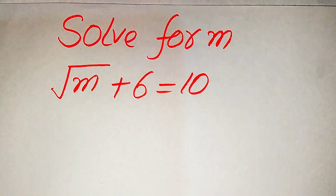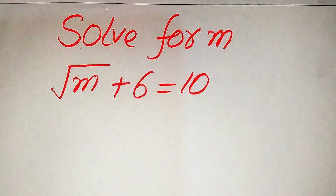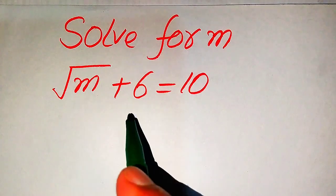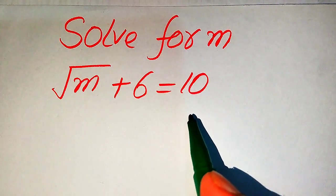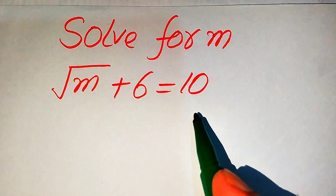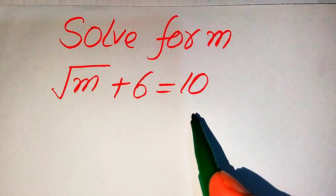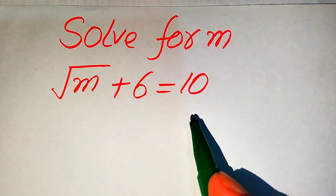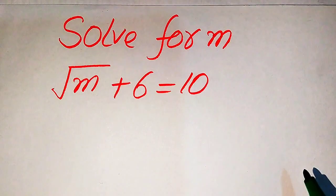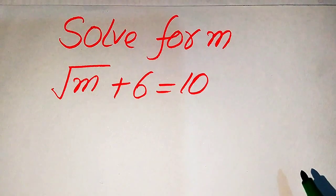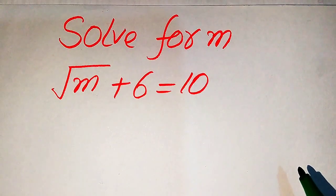Hello everyone. How to solve this problem for the values of m: if we have square root of m plus 6 equals 10, and we solve this problem for all the values of m. Here, first we find all the roots of this equation and at the last we will verify which of the roots are solutions of this equation and which of the roots are extraneous roots.